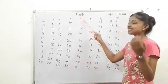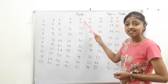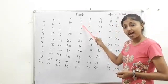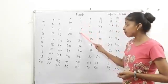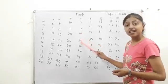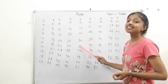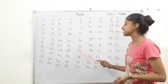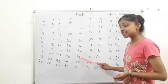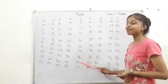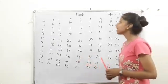Next table is of 6. 6 ones are 6, 6 twos are 12, 6 threes are 18, 6 fours are 24, 6 fives are 30, 6 sixes are 36, 6 sevens are 42, 6 eights are 48, 6 nines are 54, 6 tens are 16.